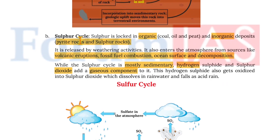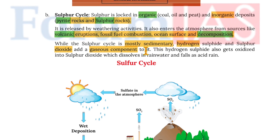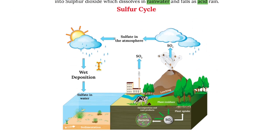Moving on to the sulfur cycle: sulfur is locked in organic deposits — that is, coal, oil, and peat — and inorganic deposits such as pyrite rocks and sulfur rocks. It is released by weathering activities and also enters the atmosphere from sources like volcanic eruptions, fossil fuel combustion, ocean surface, and decomposition. While the sulfur cycle is mostly sedimentary, hydrogen sulfide and sulfur dioxide add gaseous components to it. Hydrogen sulfide also gets oxidized into sulfur dioxide, which dissolves in rainwater and falls as acid rain. This completes the sulfur cycle.